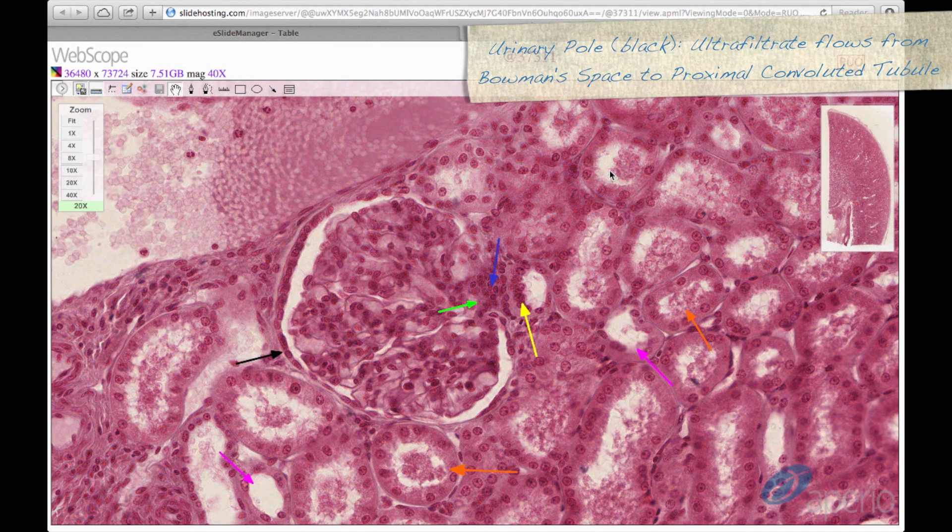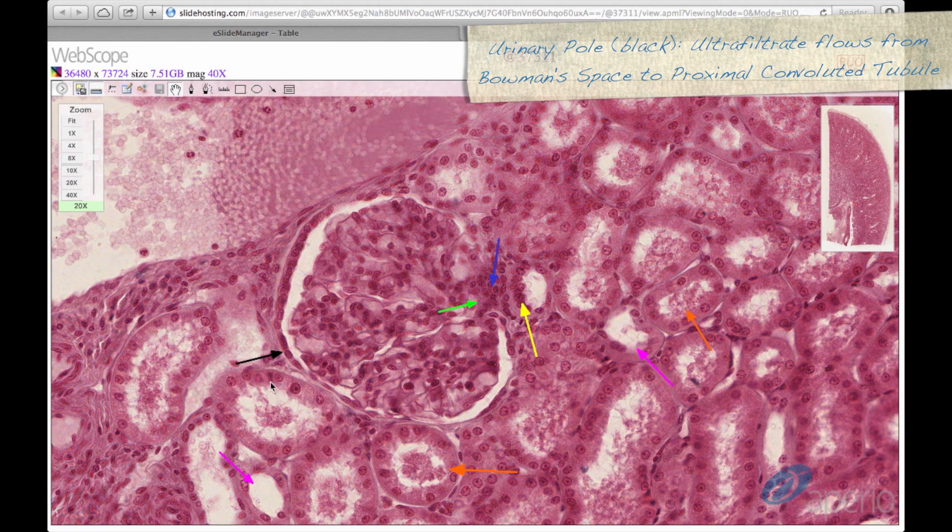The urinary pole, seen here at the black arrow, is opposite the vascular pole, where the ultrafiltrate will flow from Bowman's space into the proximal convoluted tubule.